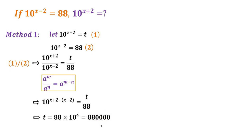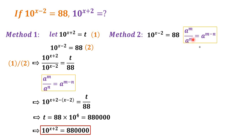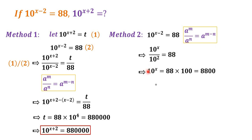So we have Method 2. We start from the known equation 10 to the power of x minus 2 is equal to 88. Then we apply the rule a to the power of m over a to the power of n is equal to a to the power of m minus n. So we have 10 to the power of x over 10 to the power of 2 is equal to 88, giving 10 to the power of x equal to 88 times 100, which is 8,800.